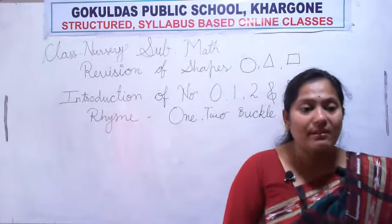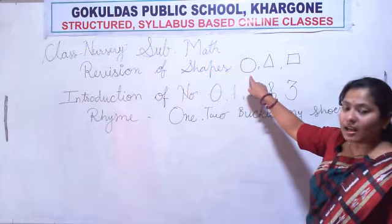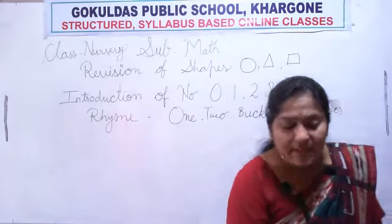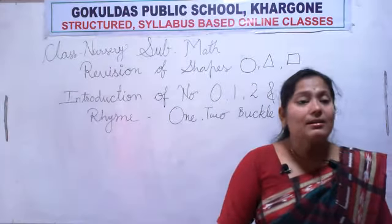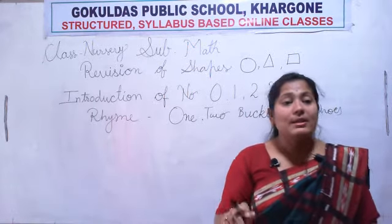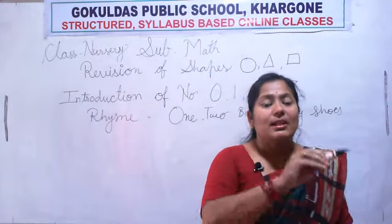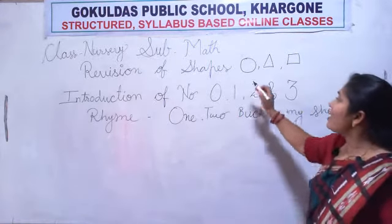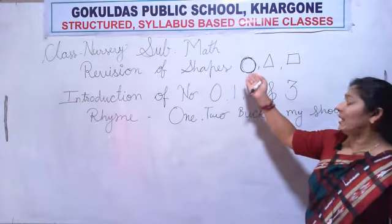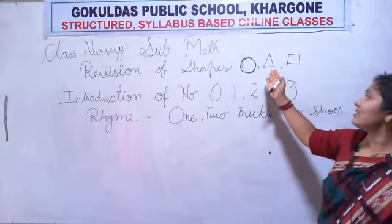Okay students, now first we revise shapes. See here — which shape is this? This is a circle. We had already learnt circle shape. Circle is round and round. How to make circle? Round and round. Circle has no sides — circle has no sides. This shape is round and round.